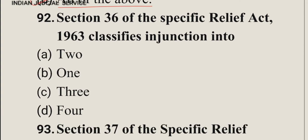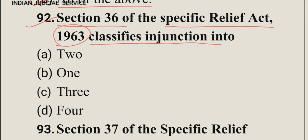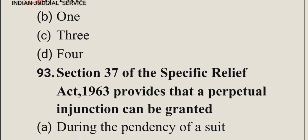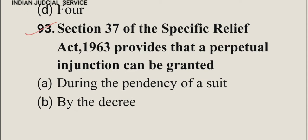Question number 92: Section 36 of the Specific Relief Act 1963 classifies injunction into — according to section 36, injunction is basically of two types: first, temporary, and second, perpetual. So the answer is option A, two types.